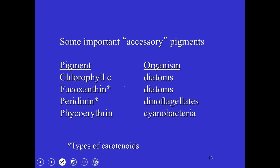Here are just a few of the organisms and some of their pigments. Diatoms have chlorophyll A; fucoxanthin is also present in diatoms and so on. I don't think it's essential that you remember which pigments occur in which organisms, but I definitely want you to remember that these phytoplankton differ in the types of pigments they have. They all have chlorophyll A. But they differ in these other pigments—they all have chlorophyll A because it's the pigment involved in the reaction center.